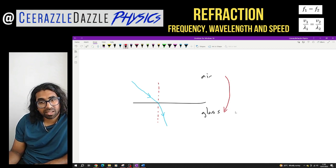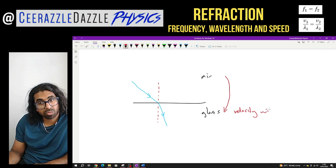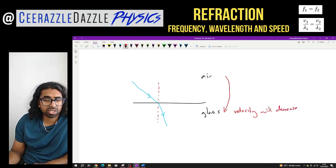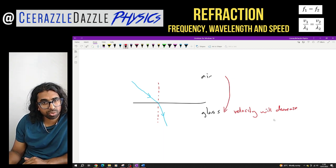So I know that my velocity will decrease. The velocity will decrease. That's what I know. Because I'm going from less dense to more dense, so my velocity will decrease here.